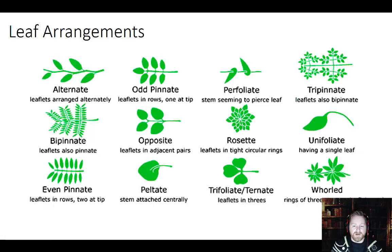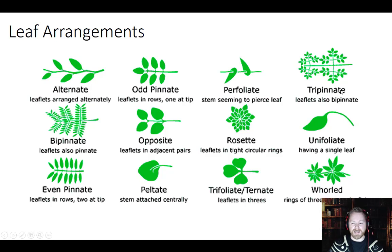The same with leaf arrangements. On your paper it may look a little different than mine just because I rearranged them in one edition of the notes. Just go through and look at the different types and think about why they're called that. Even pinnate — the leaves are paired from each other and it's even because there are two terminals. Odd pinnate — it's odd because there's one terminal. Alternate is opposite from pinnate — in pinnate they're right across from each other, while in alternate they alternate: one here, one there, and so forth down the branch.